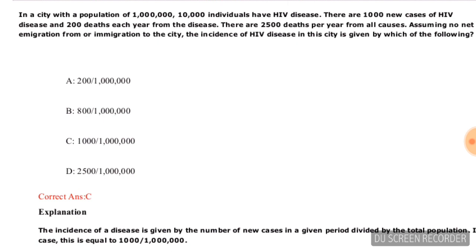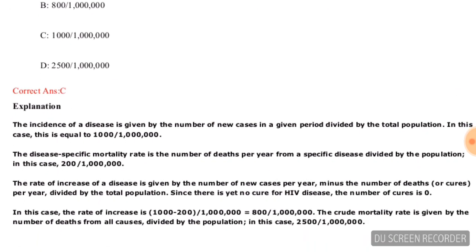In a city with a population of 10 lakhs, 10,000 individuals have HIV disease. There are 100 new cases of HIV disease and 200 deaths each year from the disease, and 2,500 deaths per year from all causes, assuming no net migration. The incidence of HIV disease in this city is given by option C — new cases divided by the total population.